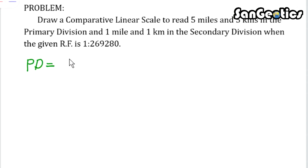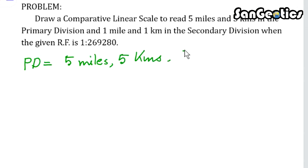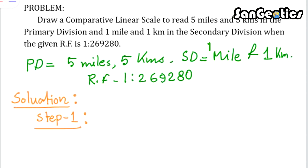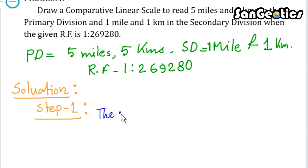From this given problem we find: primary division equals five miles and five kilometers; secondary division equals one mile and one kilometer; and RF equals 1:269280. Solution — Step 1: the given RF is 1:269280.